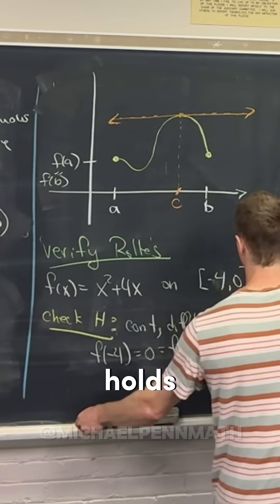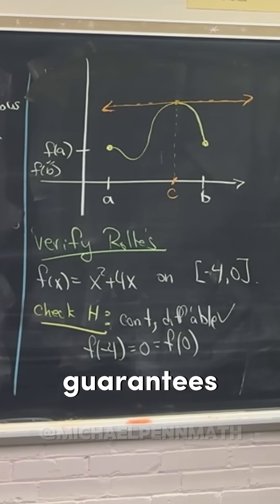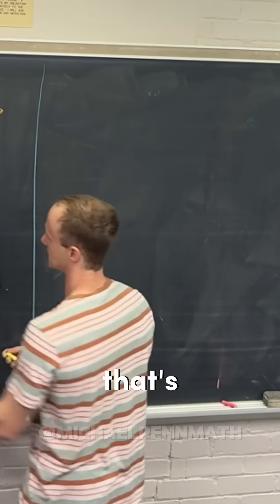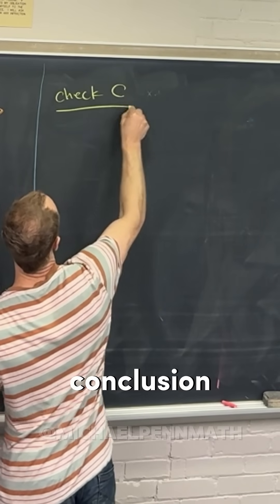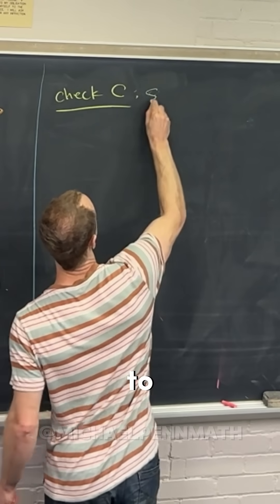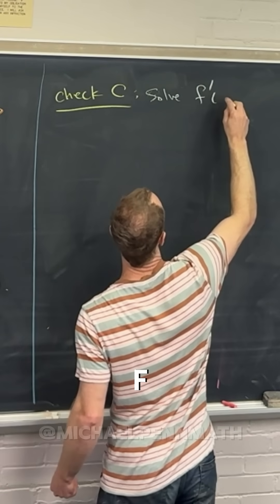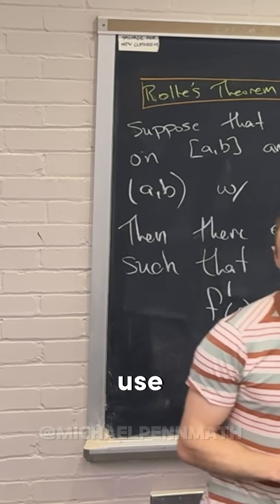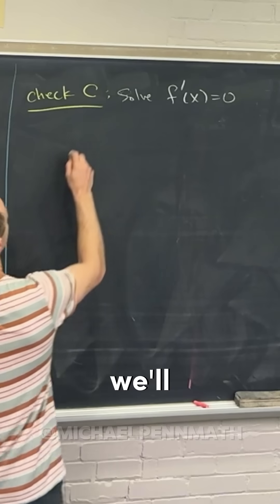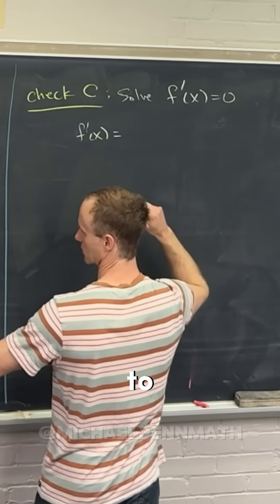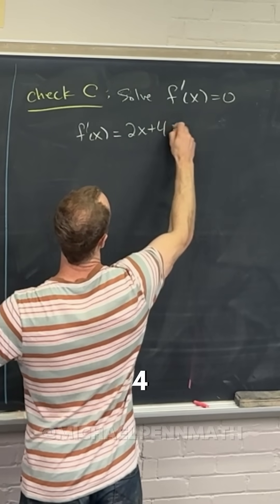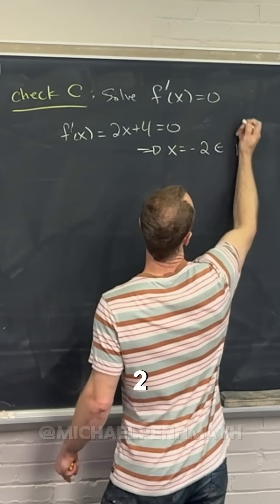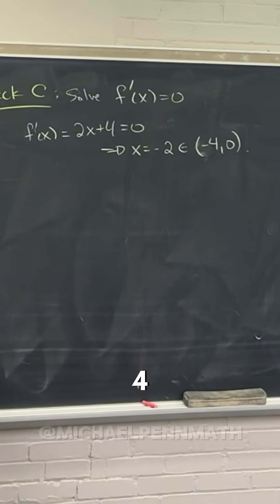Now let's check that the conclusion holds, but observe that Rolle's theorem guarantees that the conclusion will hold, but let's check the conclusion because that's what we mean by verify. So let's check the conclusion of Rolle's theorem, which means we want to solve the equation f prime of x equals zero. Essentially find a critical point, but we don't really use that language for this kind of setup. So we'll have f prime of x is equal to two x plus four. That's equal to zero when x equals negative two. And observe that negative two is most definitely between negative four and zero.